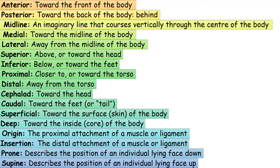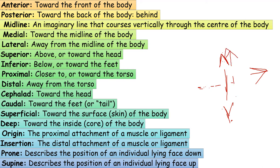Here is a quick review of all terminologies studied: Anterior — towards the front of the body. Posterior — refers to the back of the body. Midline — an imaginary line that passes vertically through the center of the body. Medial — towards the midline of the body. Lateral — away from the midline. Superior — above or towards the head. Inferior — below or towards the feet. Proximal — towards the torso. Distal — away from the torso. Cephalid — towards the head. Caudal — towards the feet. Deep — towards the inside. Origin — the proximal attachment of a muscle or ligament. Insertion — the distal attachment of a ligament or muscle. Prone — lying face downward. Supine — lying face up.